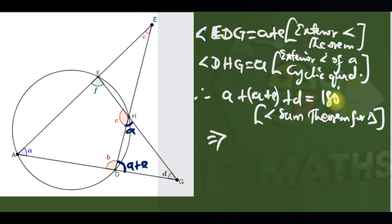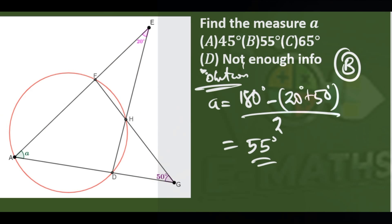Which implies that 2a equals 180 minus e plus d. Making a the subject of the formula, finally a is 180 minus e plus d over 2. So that's how I got the answer with 20 and 58.